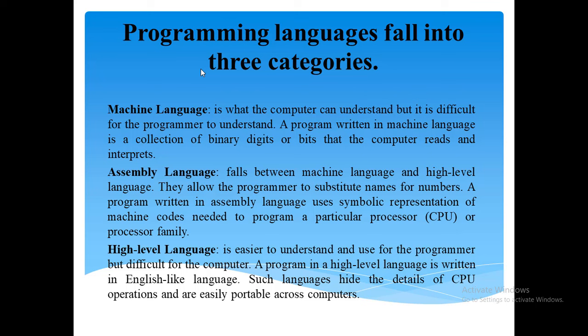The third category is the high-level language, which is easier to understand for the programmer but difficult for the computer. A program in a high-level language is written in English-like language. Such languages hide the details of the CPU operation and are easily portable across computers. A high-level language makes developing programs simpler and more understandable with respect to assembly and machine-level language.